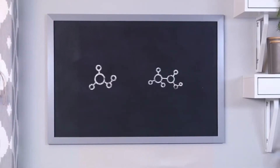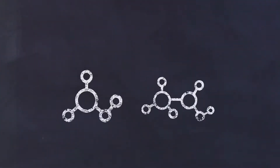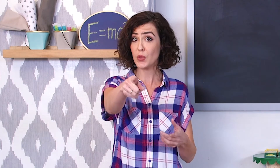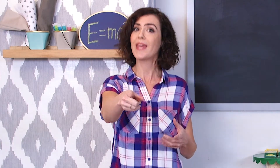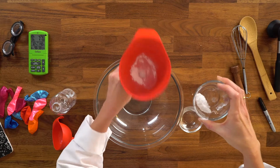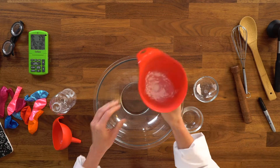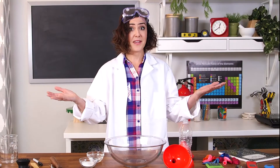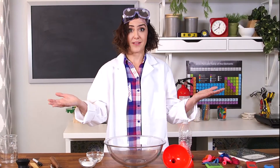A chemical reaction is when two or more molecules interact, which causes them to change. An easy chemical reaction you can do right at home is to mix baking soda with vinegar. This acid-base reaction releases carbon dioxide, filling up our balloon. Let's get experimenting!